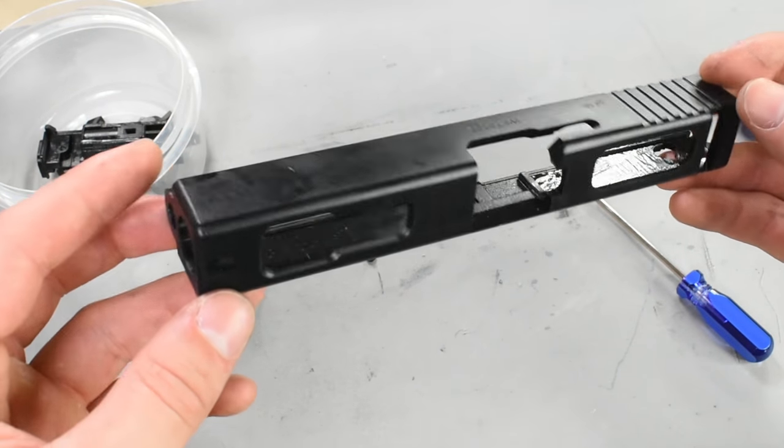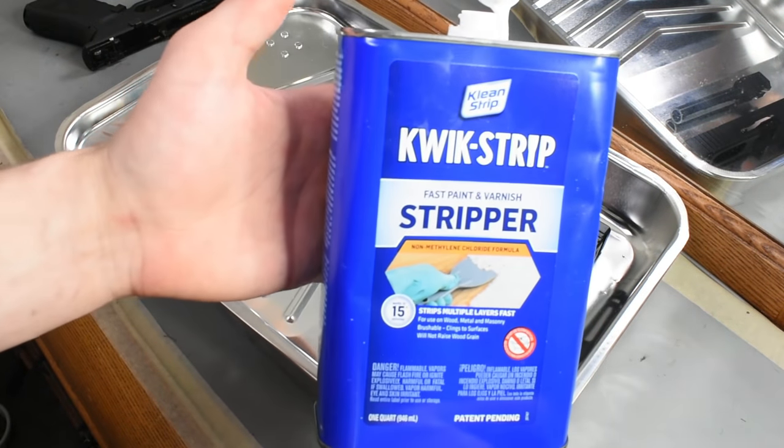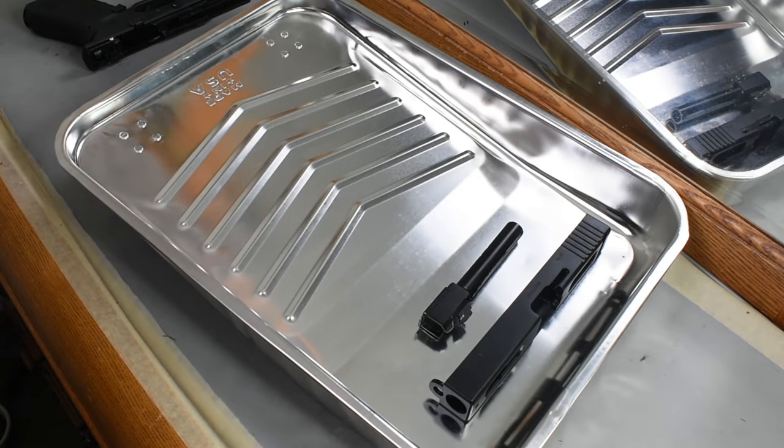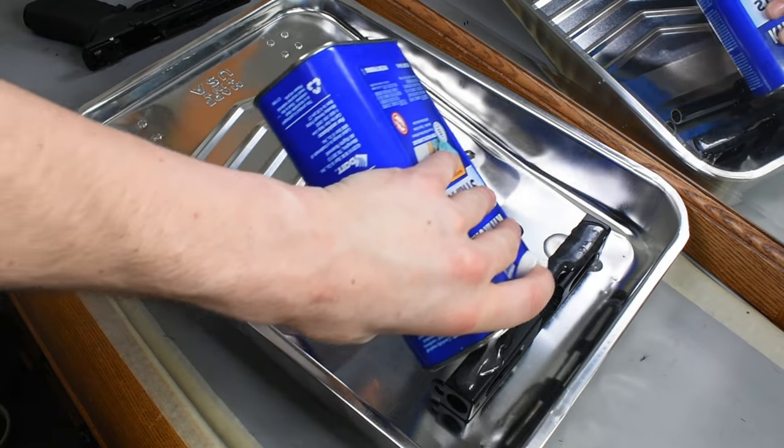Since my Glock slide is already painted black, I don't want to paint over the pre-existing paint, so I'm going to strip off all the paint with the paint remover. I'm also going to be removing the paint from my outer barrel, so I threw both items in a metal painting dish and covered all sides with the paint remover.